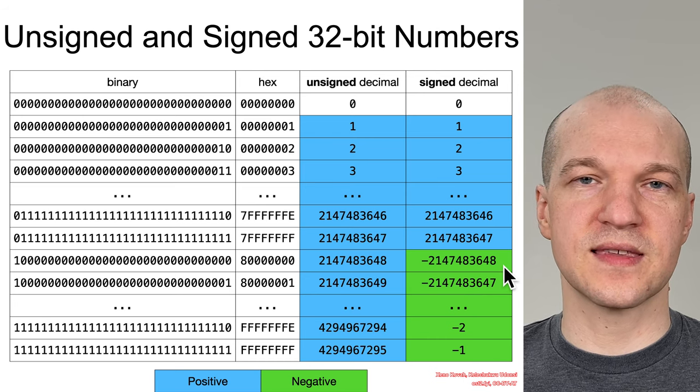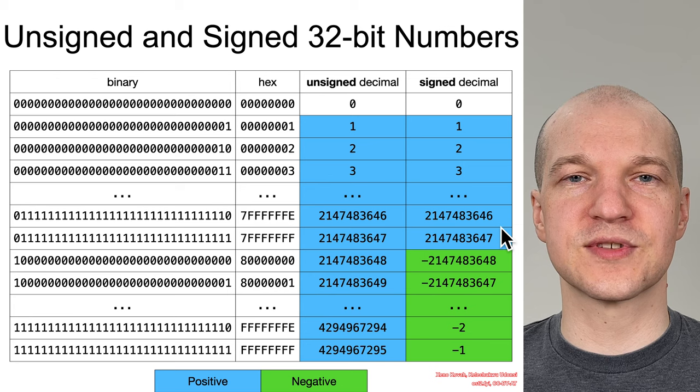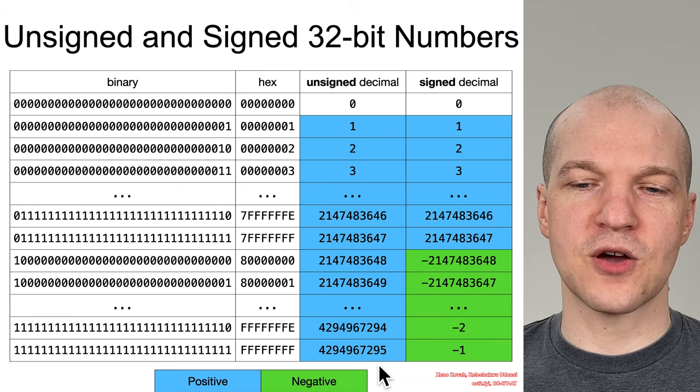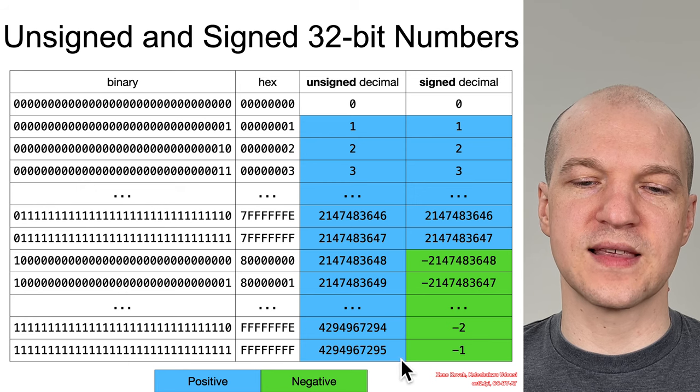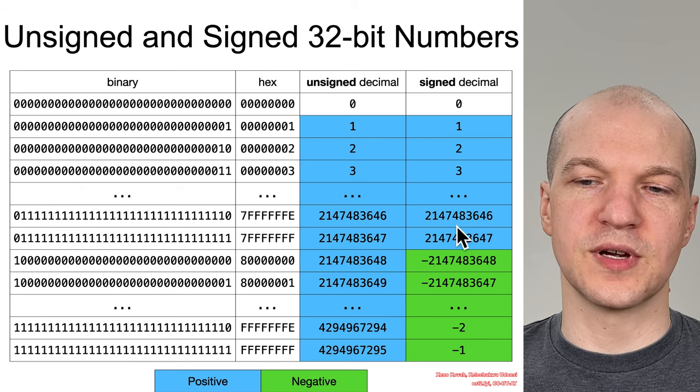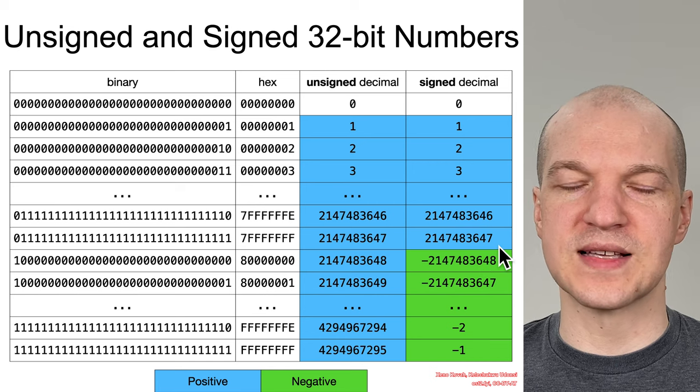All right, so this is a thing that ultimately causes all sorts of problems for code when things either A, overflow because they got so high that they got up to FF, and then they loop back around, or B, due to crossing the boundary between positive and negative values.